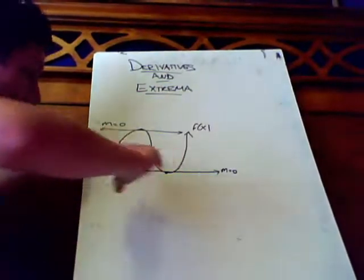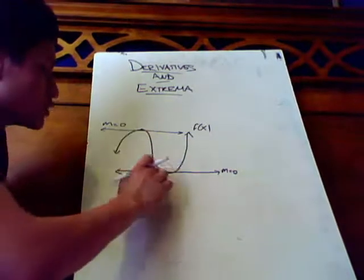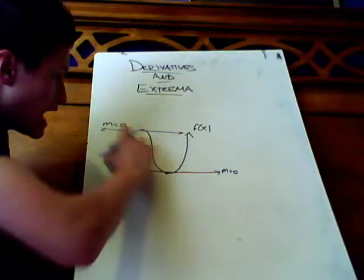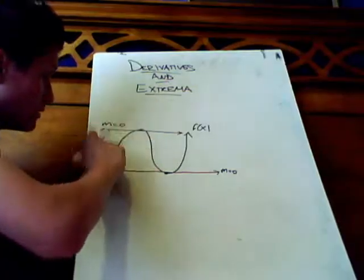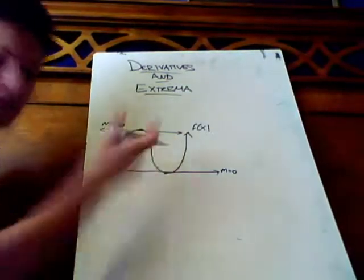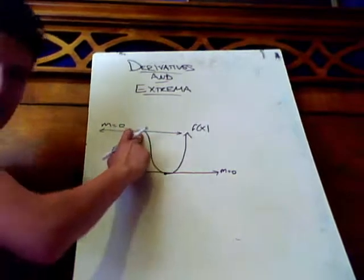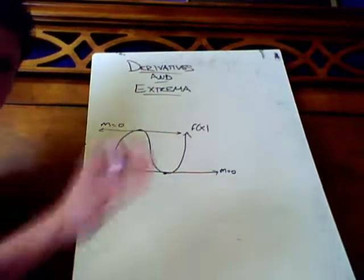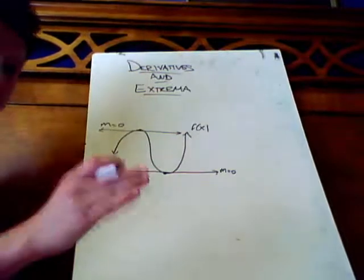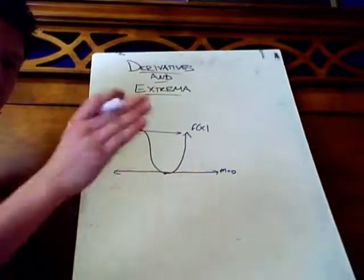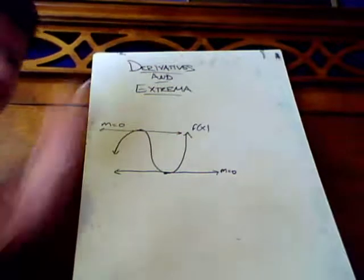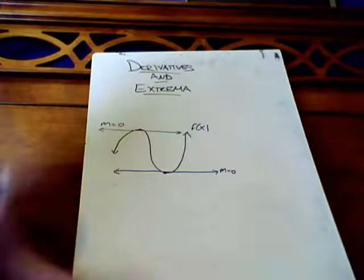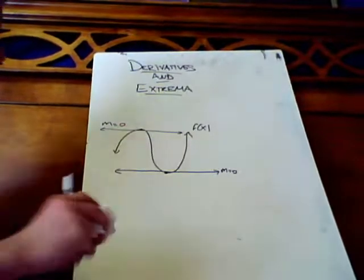Anyways, a minima occurs at the bottom of a hump, and the maxima occurs at the top of a hump, if you know what I mean. Like this. See how it's curving upward? Any point to the left or right of the function is decreasing. And on a minima, any point to the left or right of the function is increasing. So yeah, that's extrema.